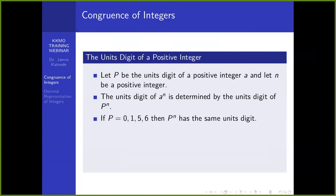We look at some special cases. If the units digit is 0, 1, 5, or 6, then any power of p will always end with the same digit. For instance, any number ending with 0 raised to n will still end with 0. Any number ending with 1 raised to n still ends with 1. Any number ending with 5 or 6 raised to n will end with either 5 or 6.